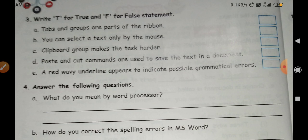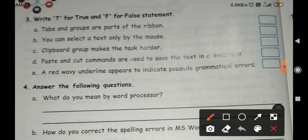Next, you will open page number 32. So today you will solve exercise number third, it means true false. Write T for true and F for false statement. First sentence is: steps and groups are parts of the ribbon. Yes, tabs are part of the ribbon. This is true.